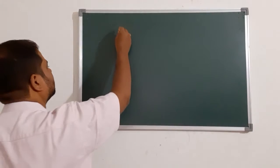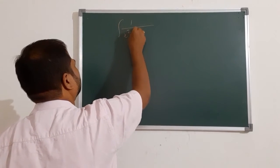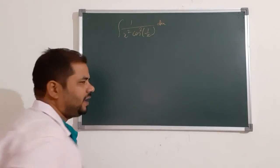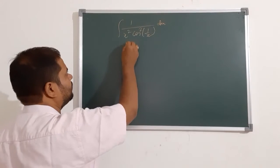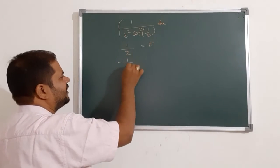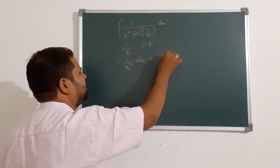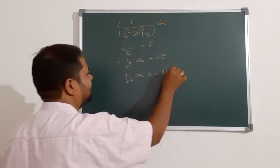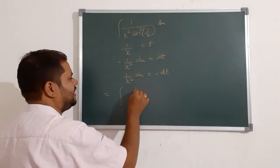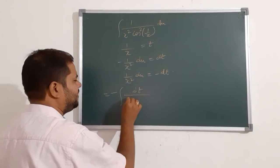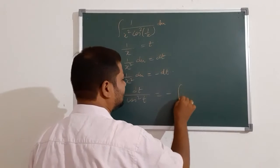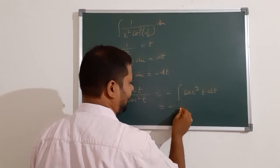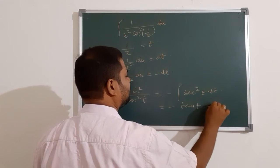Next one is: integral of (1 upon x squared) times cos squared (1 by x) dx. In this question, we let 1 upon x equal to t, so minus 1 upon x squared dx equals dt. Therefore 1 upon x squared dx equals minus dt. Substituting, we have minus the integral of cos squared t dt, which gives minus tan t plus c. So the solution is minus tan (1 by x) plus c.